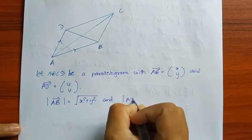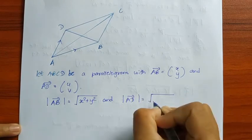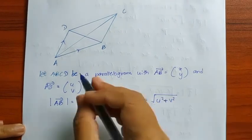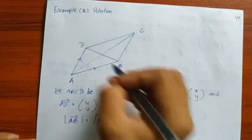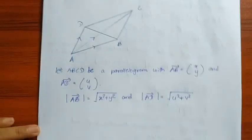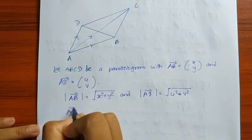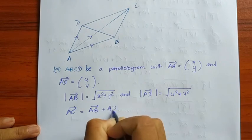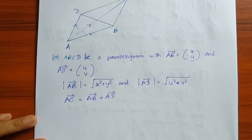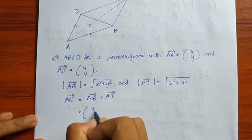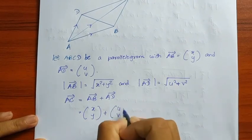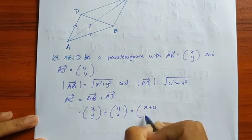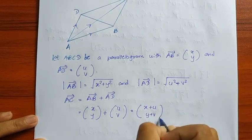Modulus of vector AB equals square root of A squared plus Y squared. And modulus of vector AD equals square root of U squared plus V squared. Vector AC equals vector AB plus vector AD, so AC has components X plus U, Y plus V.